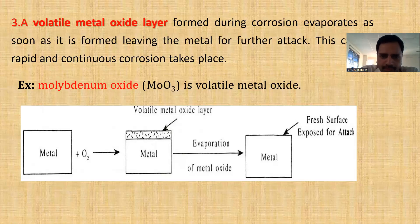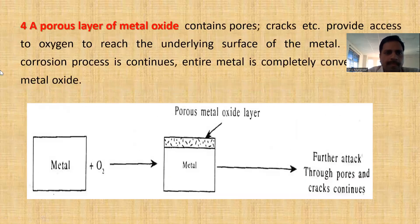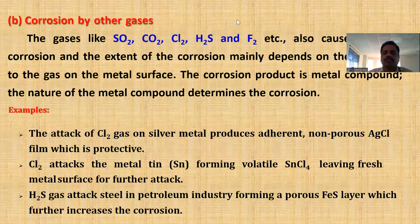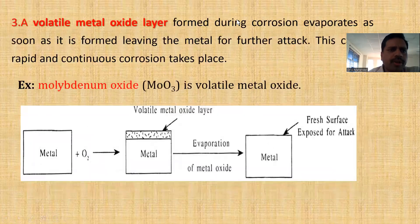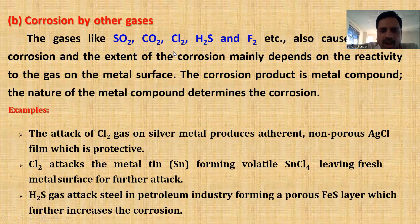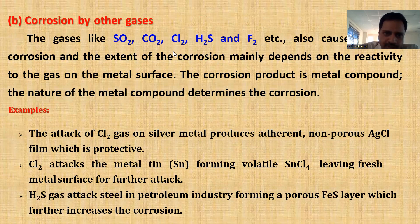Porous metal oxide: when the metal is exposed to oxygen, there is a formation of a metal oxide layer. This metal oxide is porous in nature, so oxygen can easily penetrate into the next layer and the corrosion will continue until all the metal is destroyed. Corrosion by other gases: if gases like sulfur dioxide, carbon dioxide, chlorine, hydrogen sulfide, and fluorine are present in the atmosphere, the metal will undergo more corrosion.